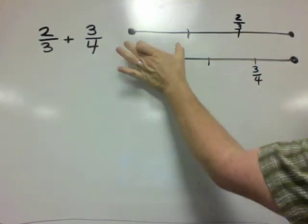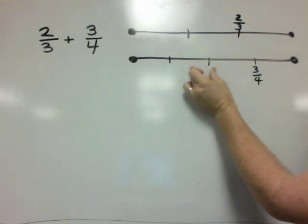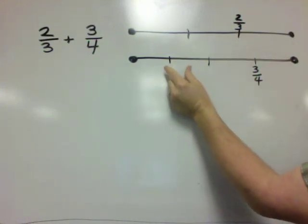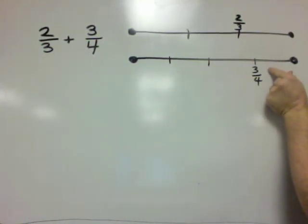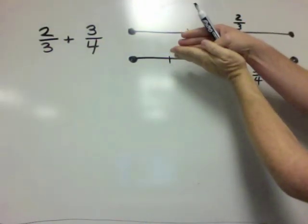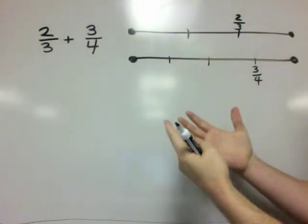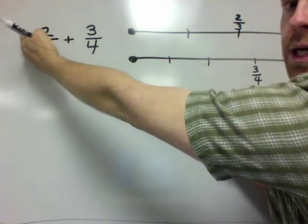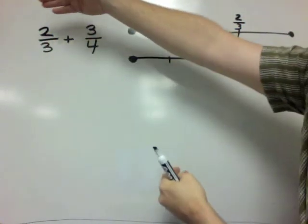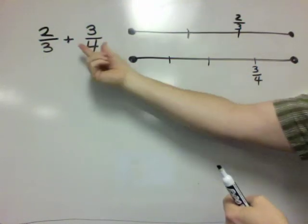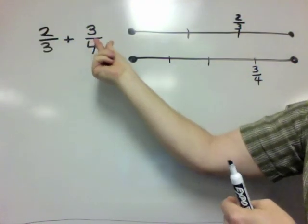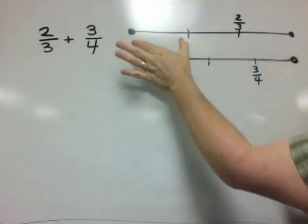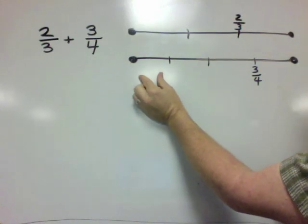Now you can see that these intervals are not the same intervals. Up here, thirds are bigger than quarters, and so we can't directly add them together. That would be kind of like trying to add two nickels plus three dimes and ending up with five something-or-others. So we can't simply add two plus three and get some sort of answer, because these intervals are different from these intervals.